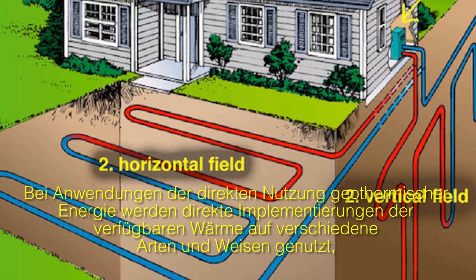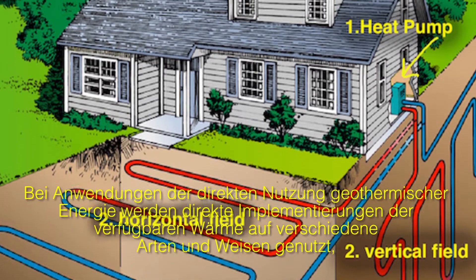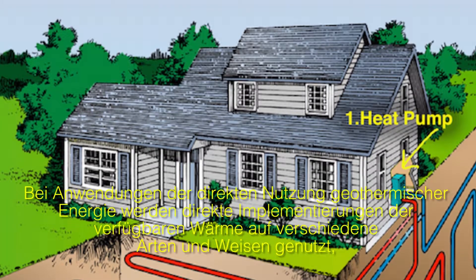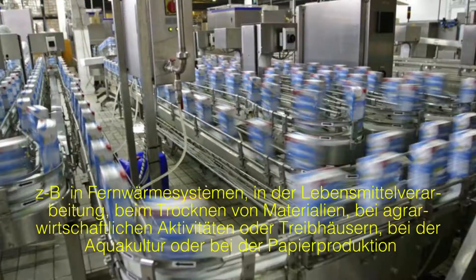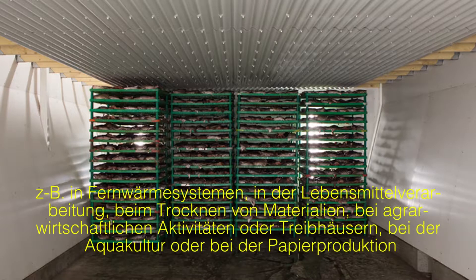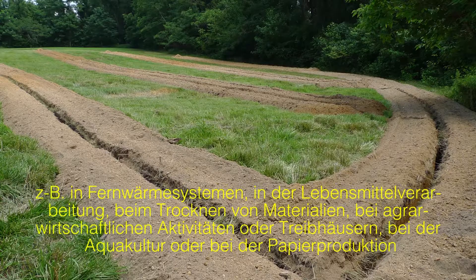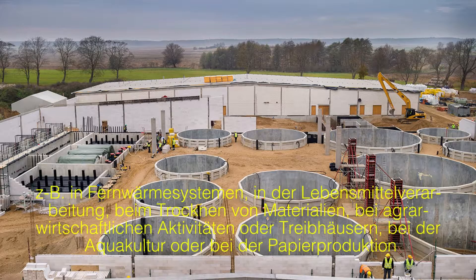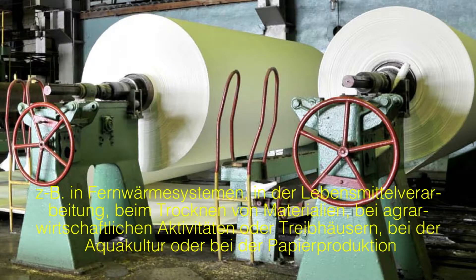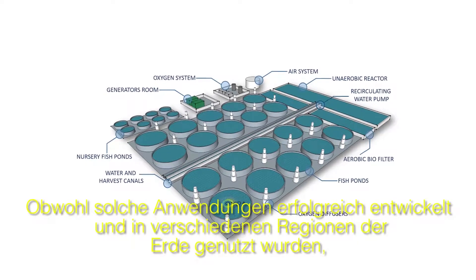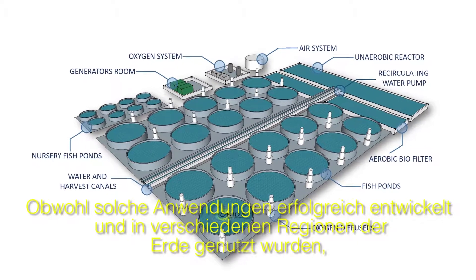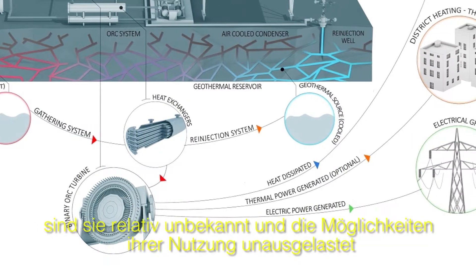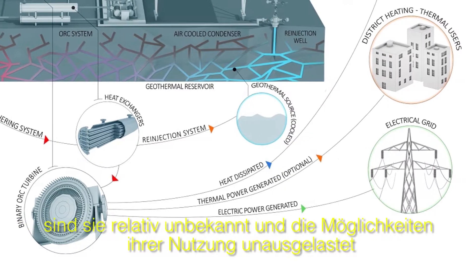Direct use applications of geothermal energy involve the direct implementation of available heat for a broad range of purposes, such as district heating, food processing, drying materials, agricultural activities, greenhouses, aquaculture, and paper manufacturing. Although such applications have been developed and successfully used throughout the world, they remain relatively unknown and vastly underutilized.